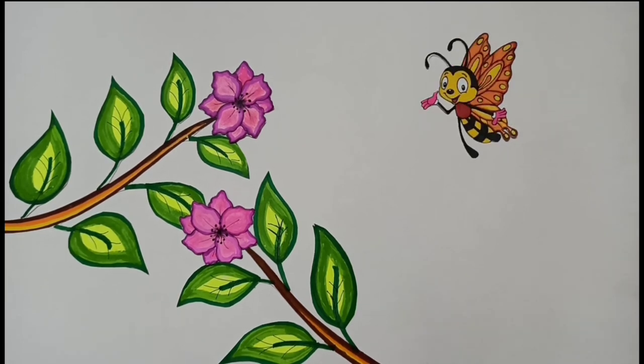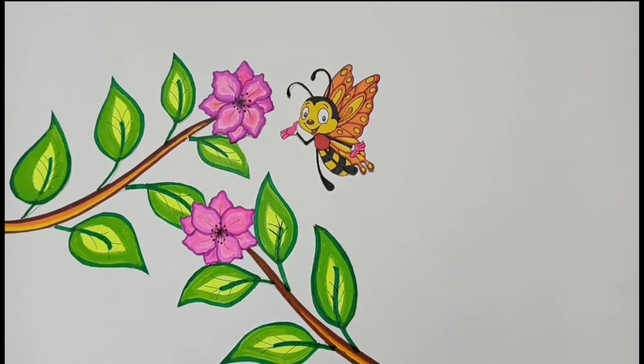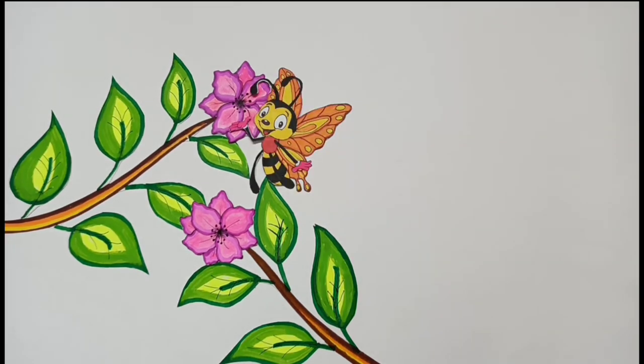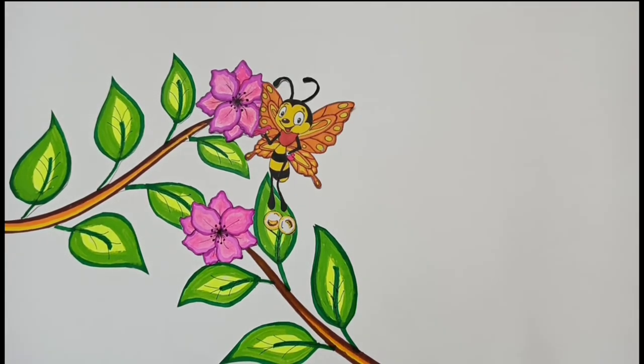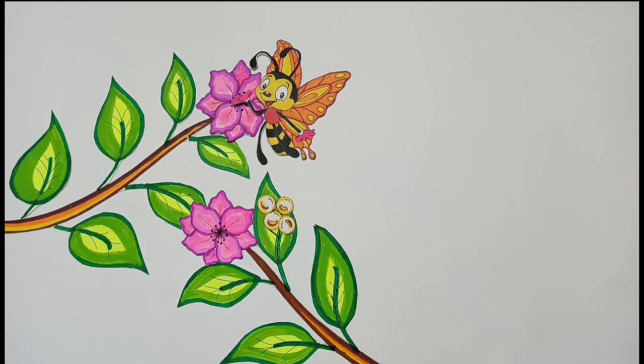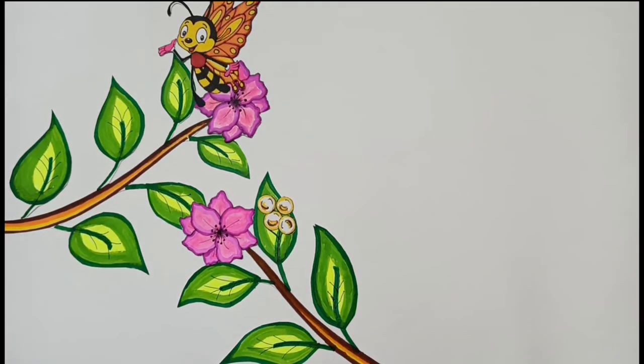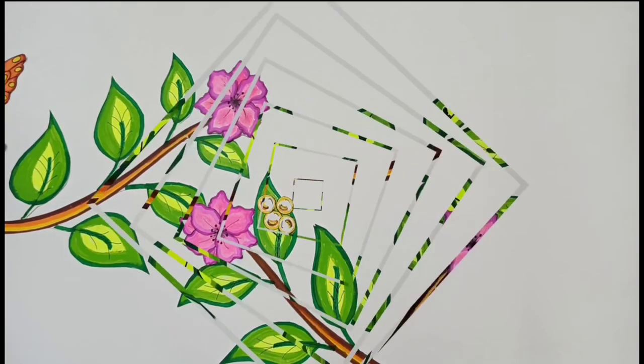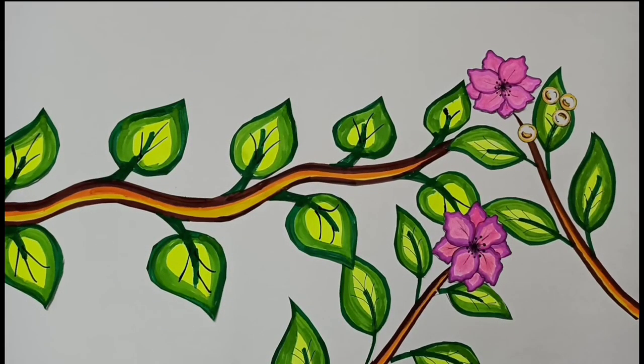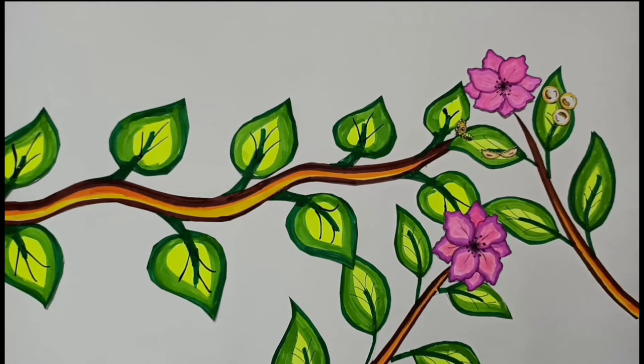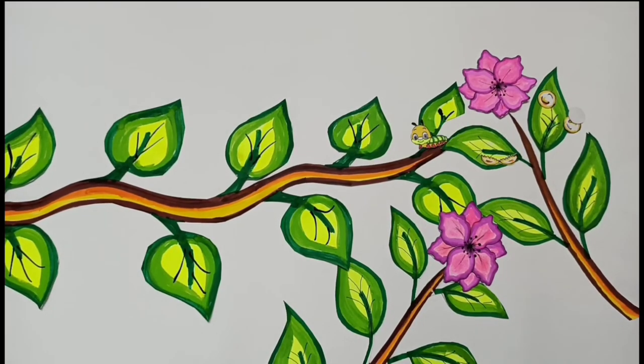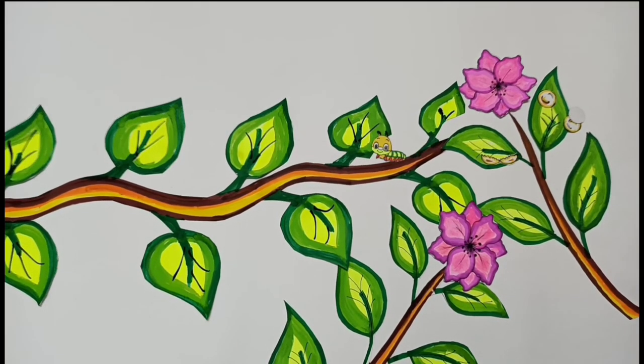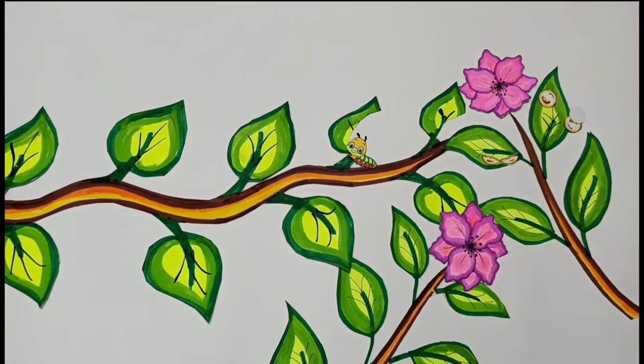A butterfly lays eggs on the leaves of a plant. These eggs hatch and young ones come out of the eggs. They are called larvae or caterpillars. They start feeding on the leaves and begin to grow.